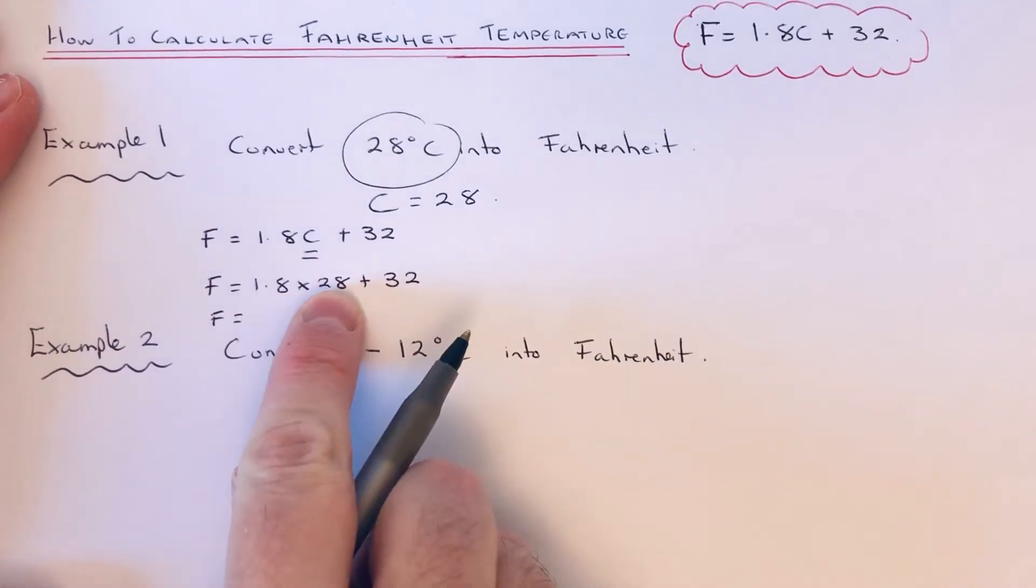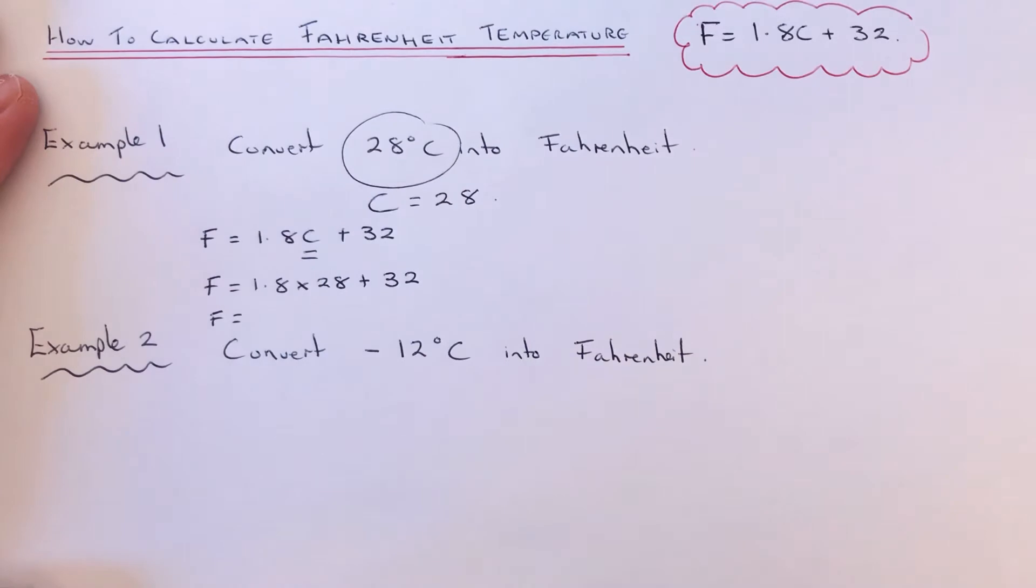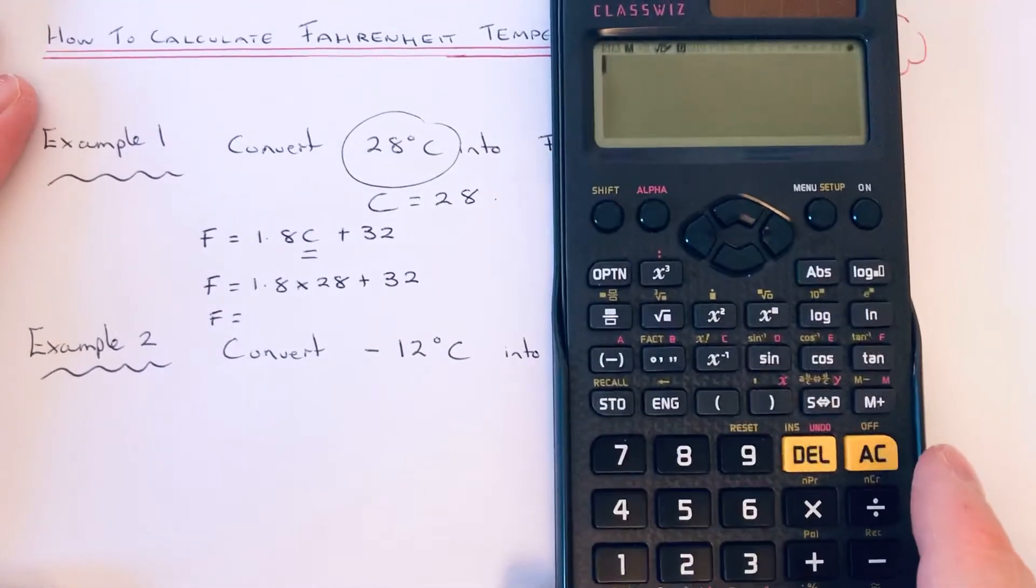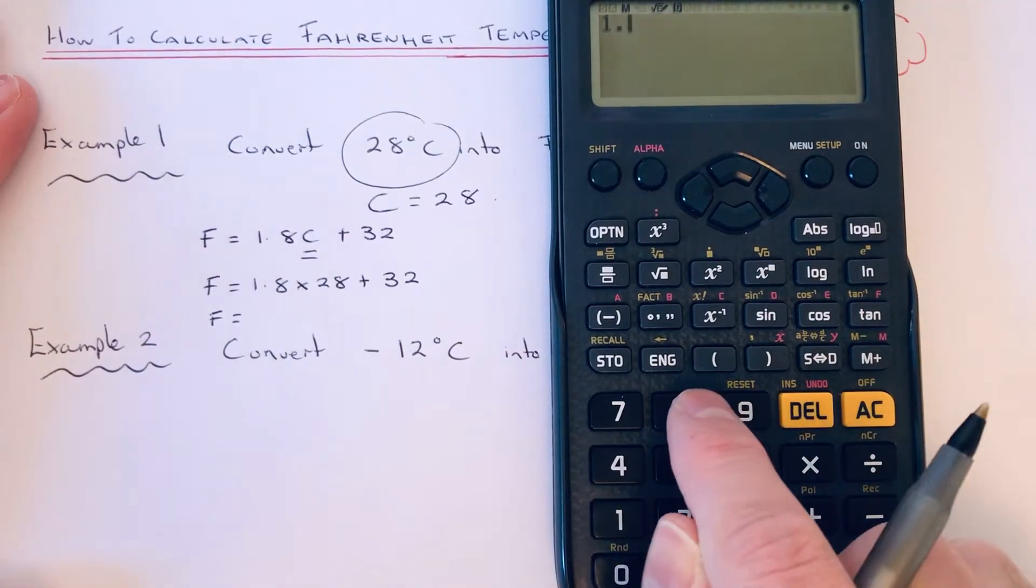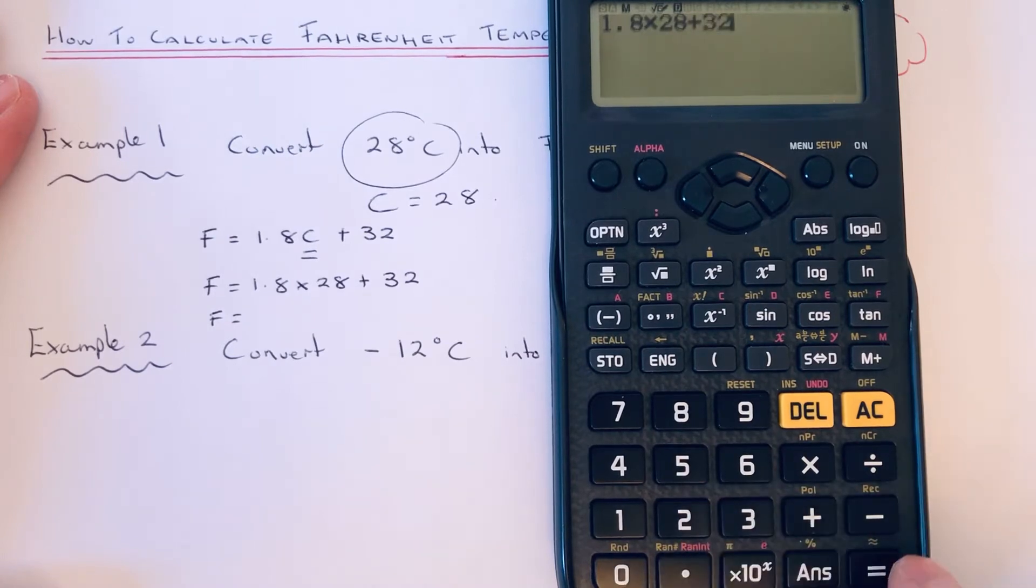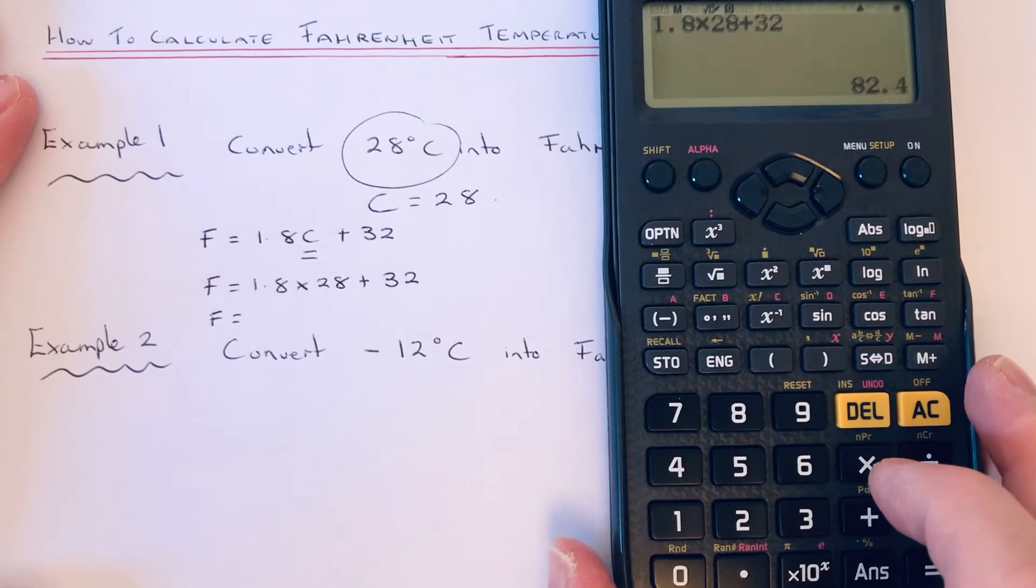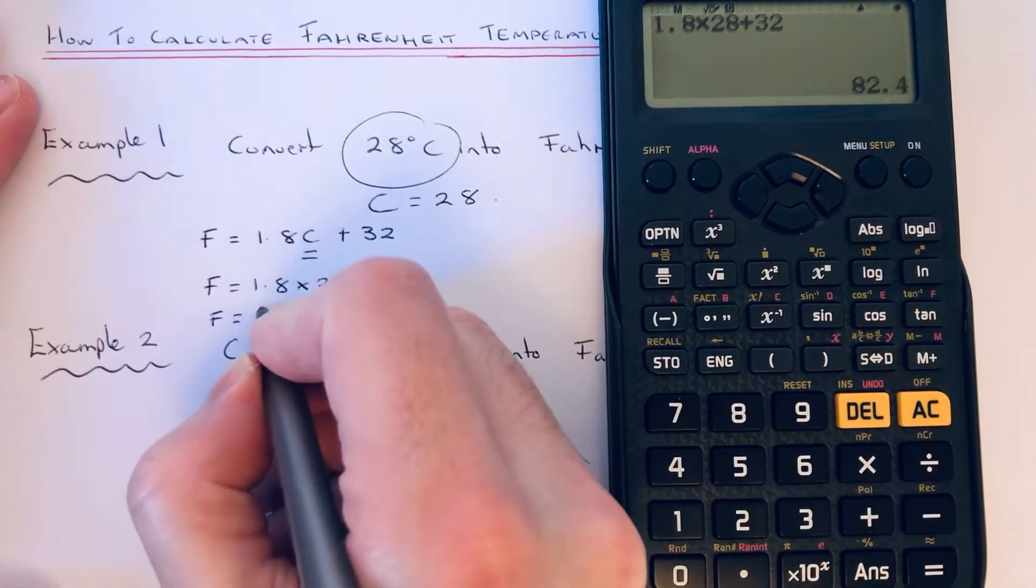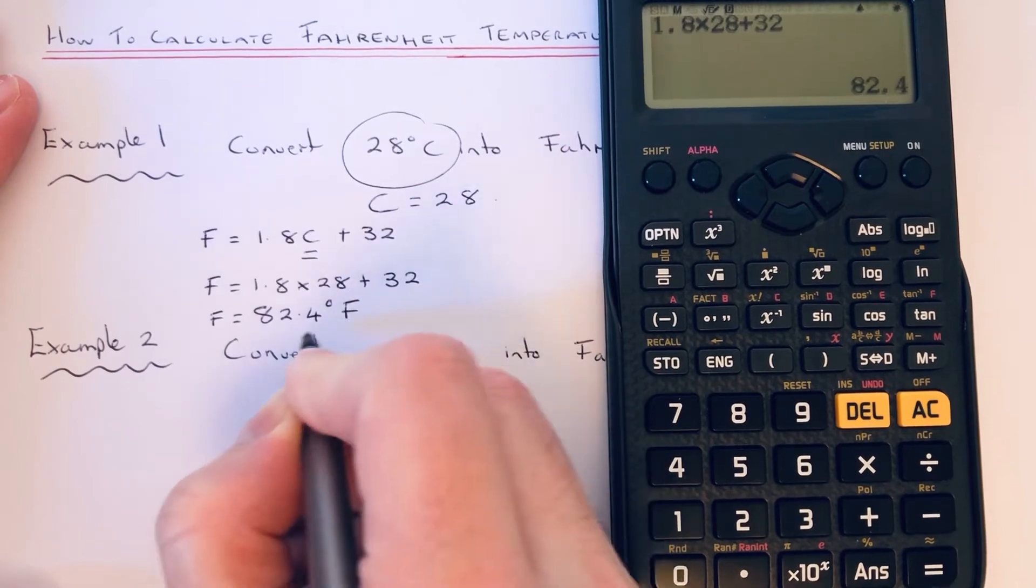You could do this in two steps and multiply the 28 by 1.8 and then add on the 32, or you can just do it in one go on your calculator. That's the way I'm going to do it. So 1.8 times 28 add 32, let's do it, and we get 82.4. So that is the temperature in degrees Fahrenheit.